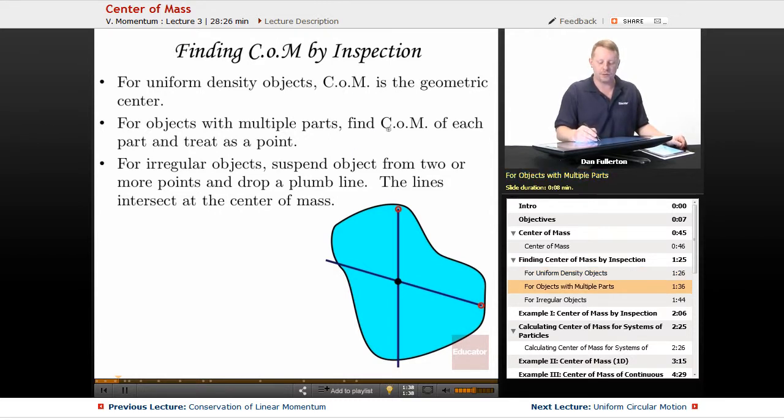For objects with multiple parts, you can find the center of mass of each part and treat it as a point and then look at that geometric center.